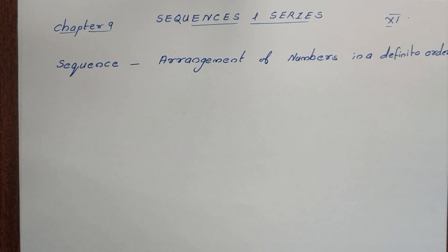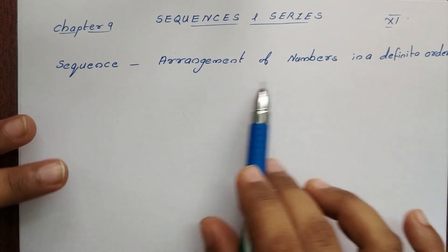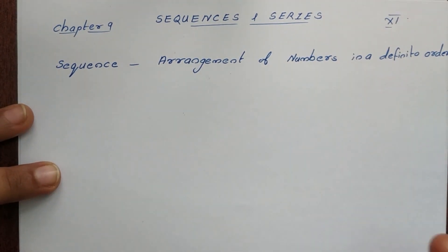We will cover arithmetic progression and geometric progression. We will define a sequence — that is the arrangement of numbers in definite order.